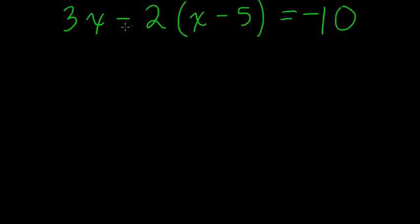Alright, so here they want us to solve for x. The first thing I would do is try and simplify and deal with this parenthesis right here. Because in order to get this x minus 5 out of the parenthesis, I first must distribute this 2 to each part.